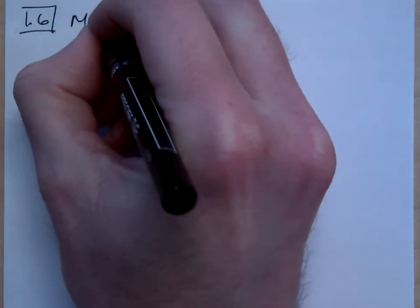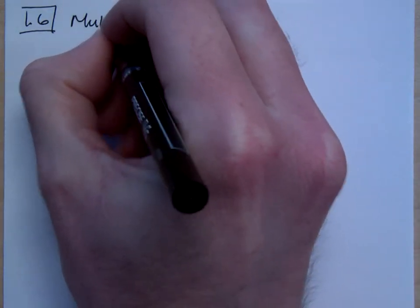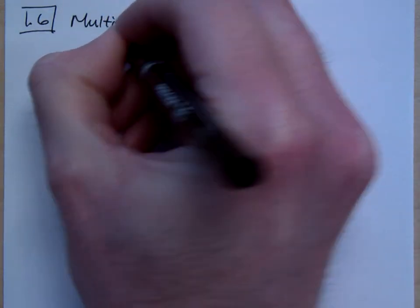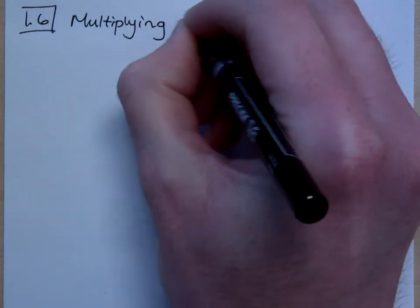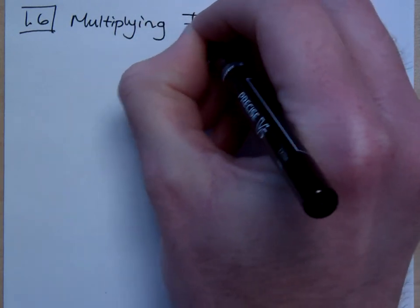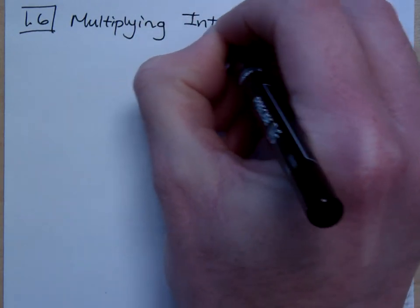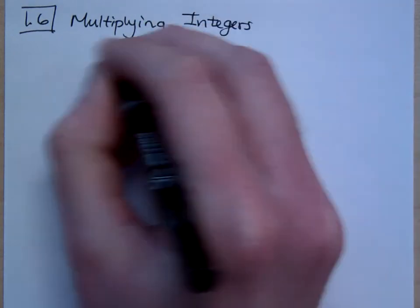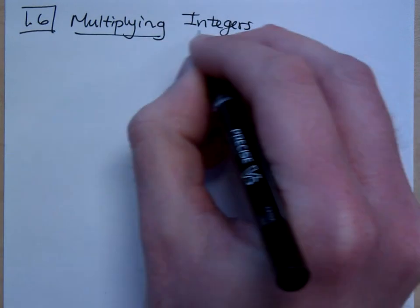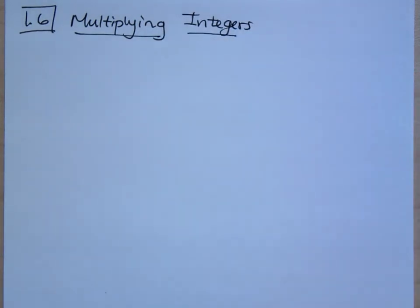All right, in the next section, we get to what I really like to do. It's called multiplying. I love multiplying. Multiplying makes me happy. It's a lot better than adding and subtracting — I think it's better than adding and subtracting.